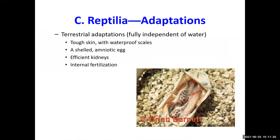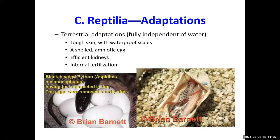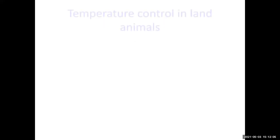Reptiles have tough skin, a shelled egg, efficient kidneys, and internal fertilization. Instead of releasing eggs and sperm to the environment, they have an internal delivery system that results in fertilized eggs inside the body of the female. So reptiles are fully independent of water, unlike the amphibians which must return to water.